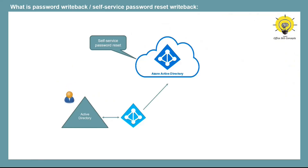If an on-premise user resets his password using self-service password reset, that password will not be written back to on-premise, because by default Azure AD Connect does not synchronize passwords back to on-premise. So when a new password sync cycle runs, the old password stored in on-premise will overwrite the new password in Azure Active Directory. The user will not be able to log in with the new password.